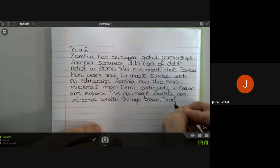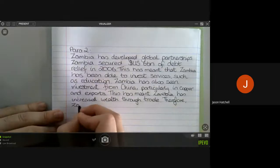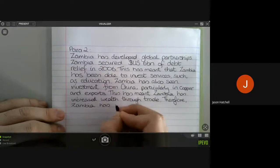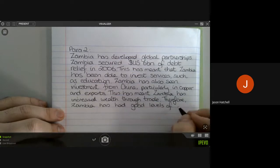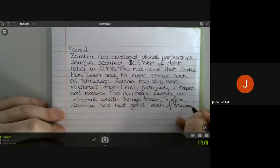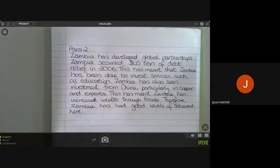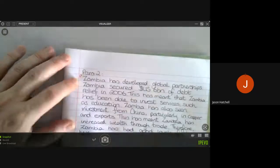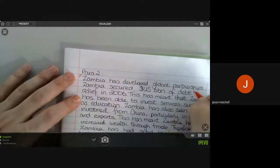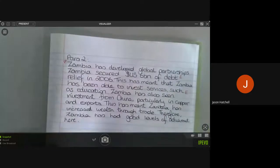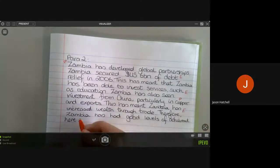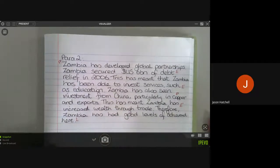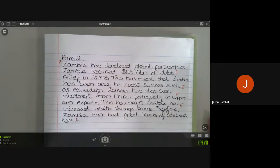Therefore, Zambia has had good levels of achievement here. So that's our second paragraph done. Again, let's go back through. What we've done here is we have made a point. We have also given some evidence for that point and then explained that point. We've also made a slightly separate point, but that's okay. And we have given some explanation for that and the link at the end as well. So we've got points, evidence, explaining and linking back to the question.